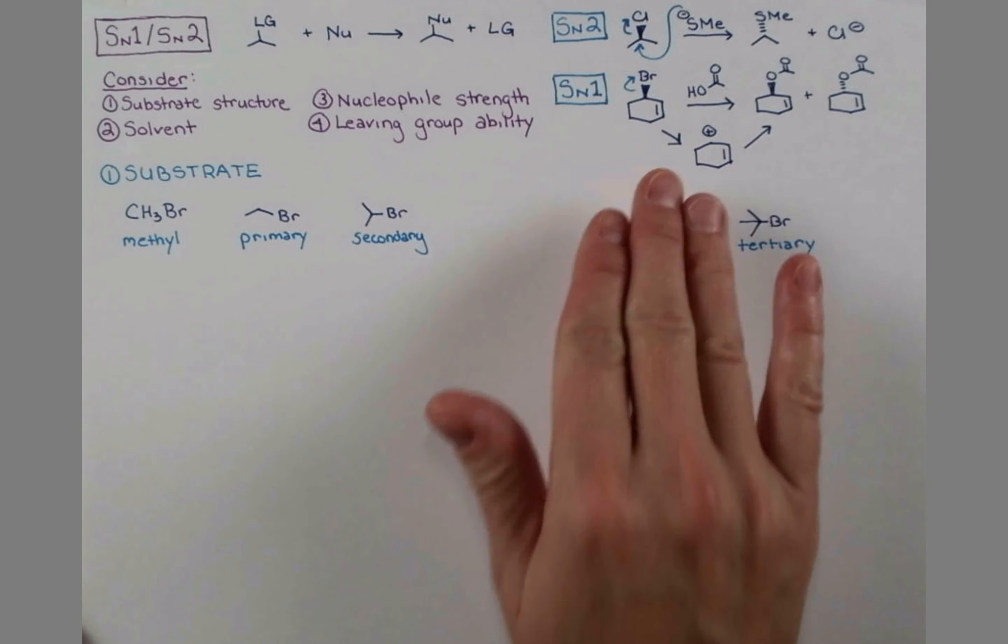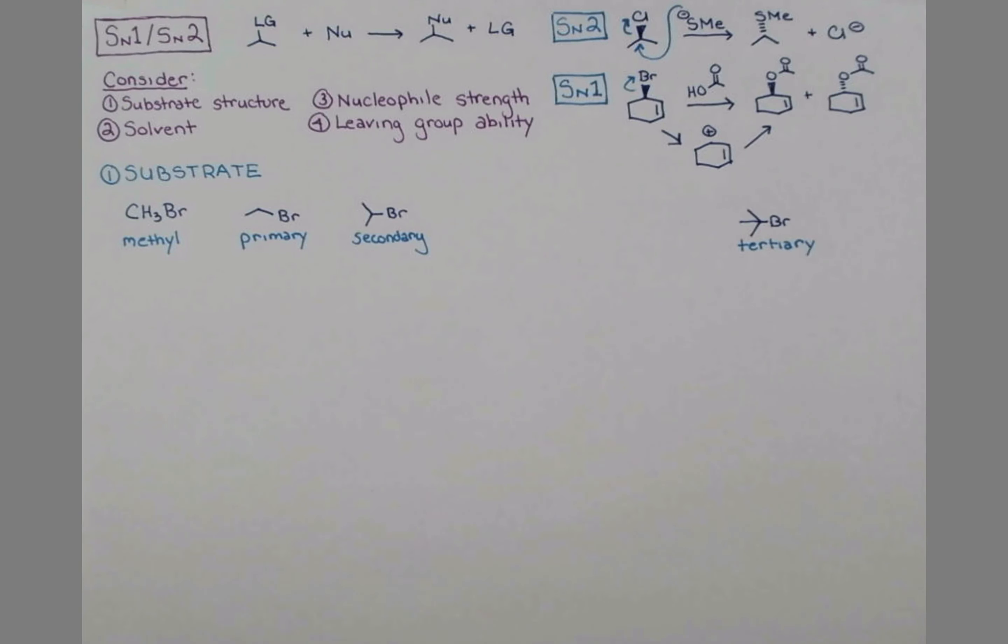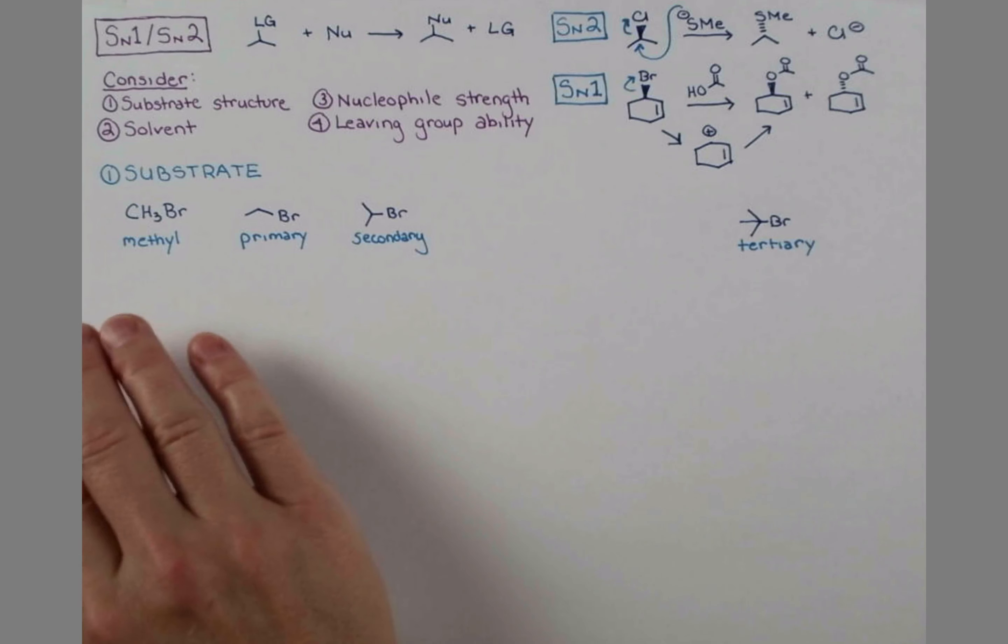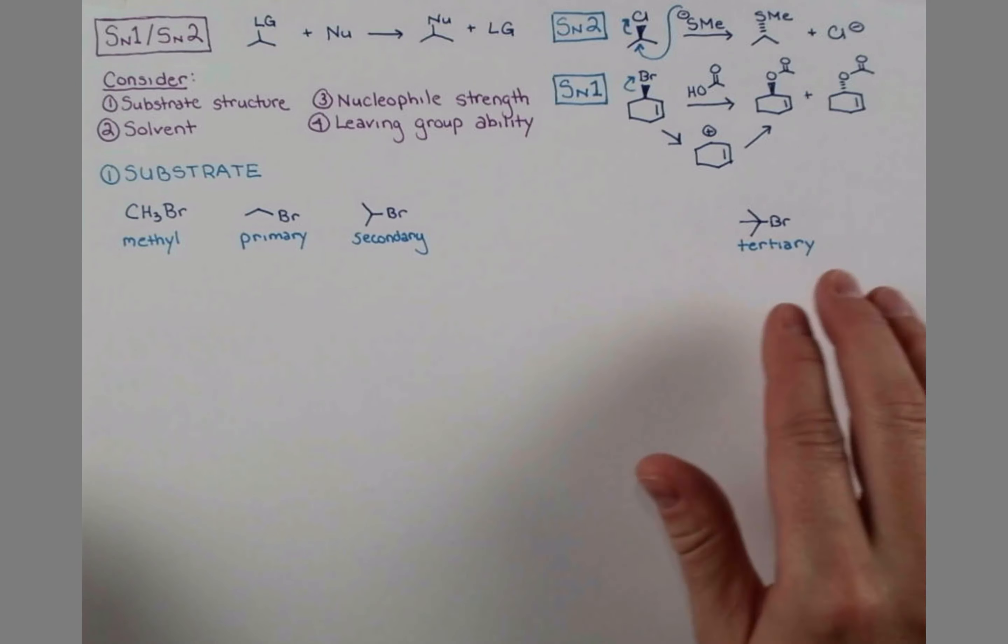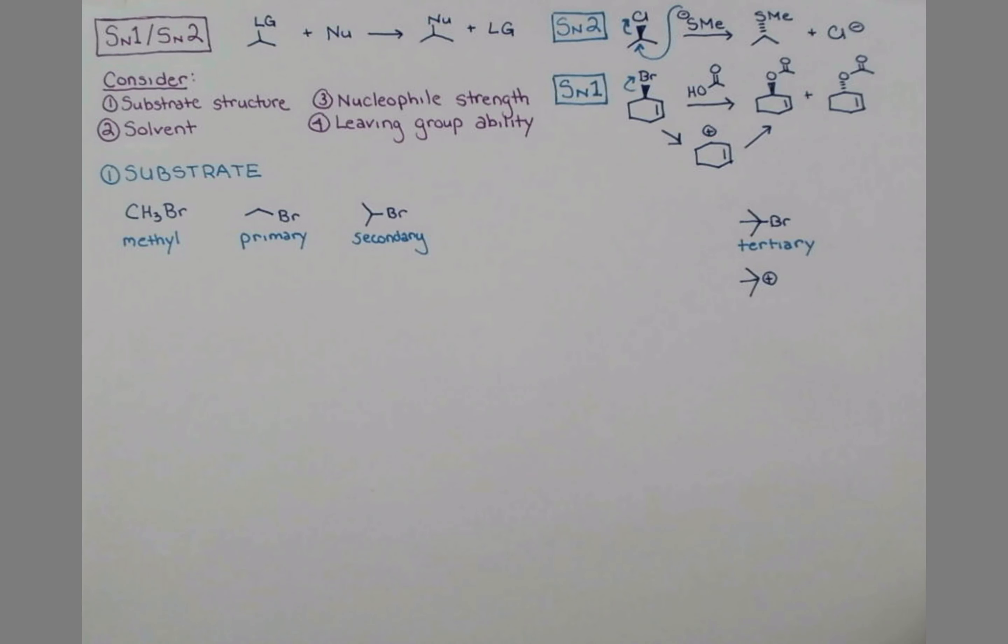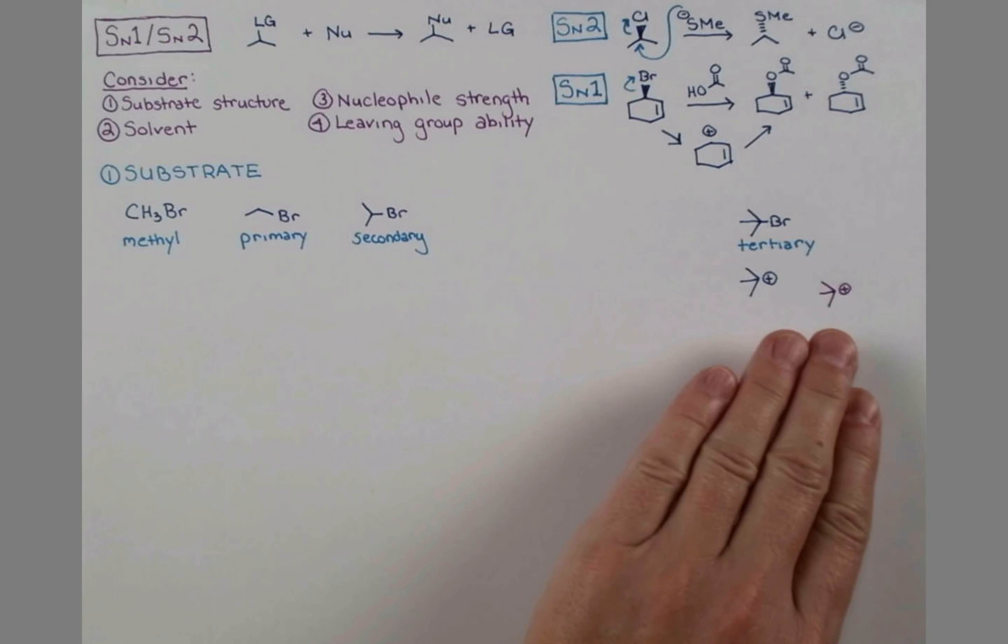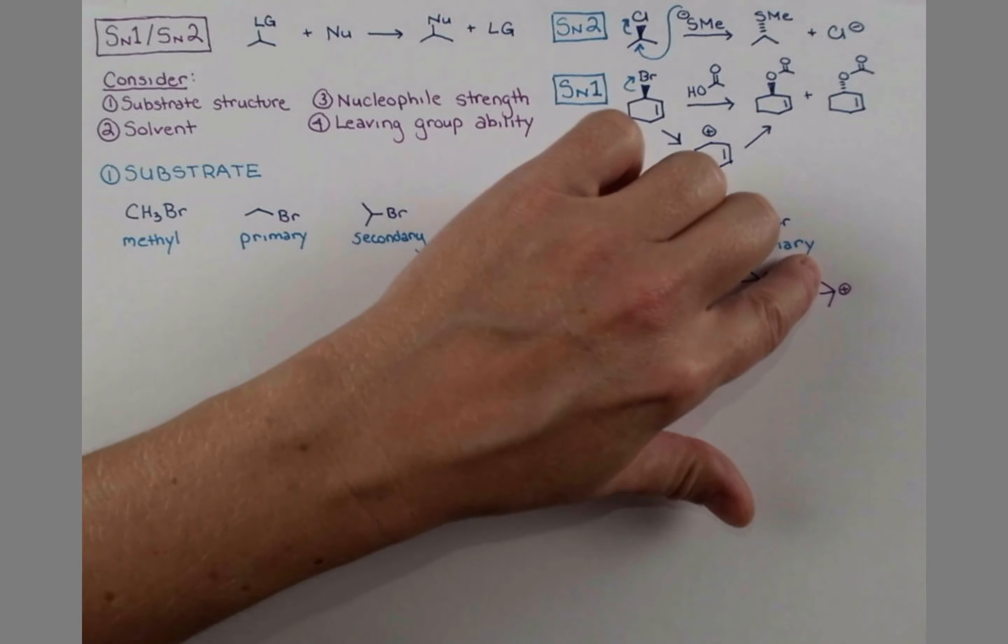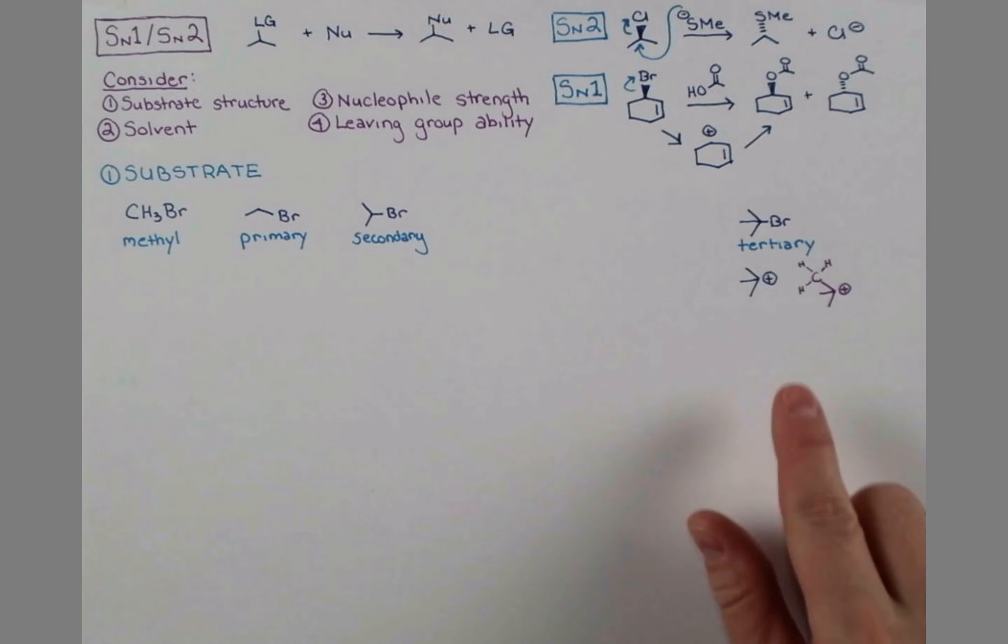In this SN1 mechanism, we form a carbocation. So it's really important to think about the carbocation that can form from each of these substrates. Let's start with tertiary first. Here's our carbocation, a tertiary carbocation. This is quite stable due to an effect called hyperconjugation. If I redraw the cation and then draw out one of these CH3 groups, there's actually stabilization that can occur from the electrons in these CH bonds. We get a lot of stabilization of this carbocation by hyperconjugation.